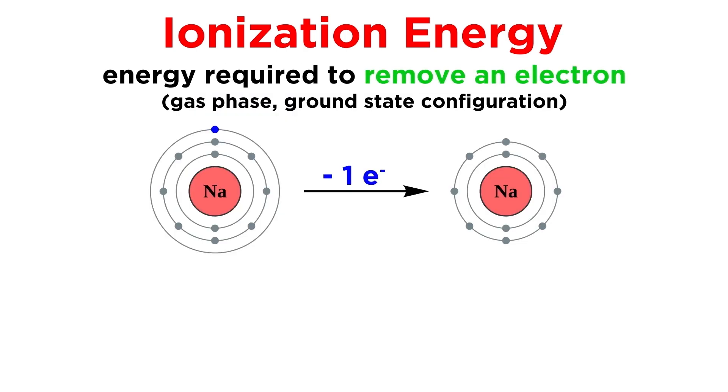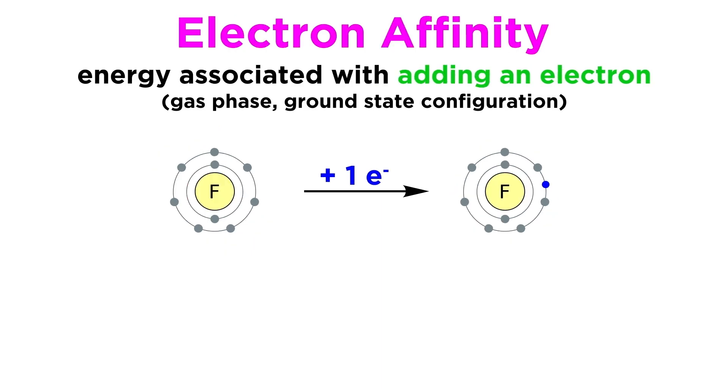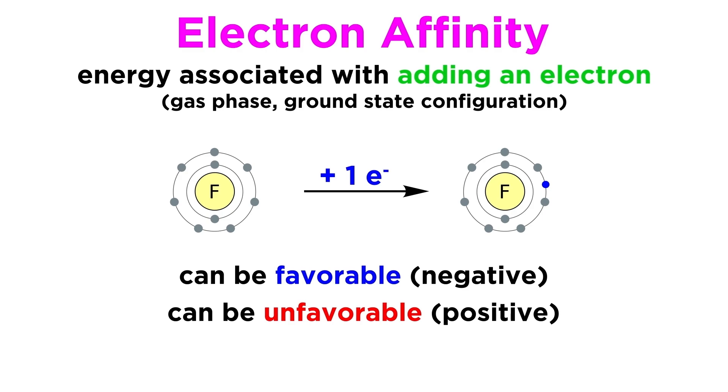So we now know that ionization energy is the energy required to remove an electron from a neutral atom. We also want to learn about electron affinity. This is precisely the reverse concept, the energy change involved with adding an electron to a neutral atom in the gas phase, thus forming a negatively charged ion. This process could absorb energy or release energy, depending on the element, and a negative electron affinity will mean that the process is actually favorable for a given element.